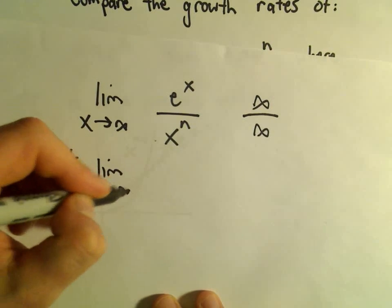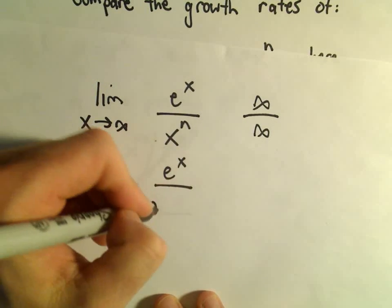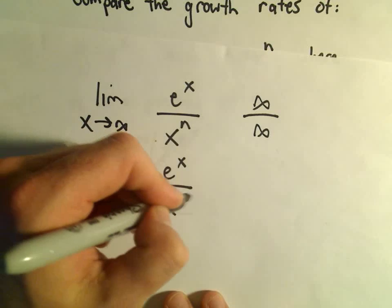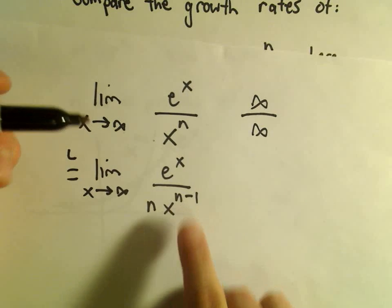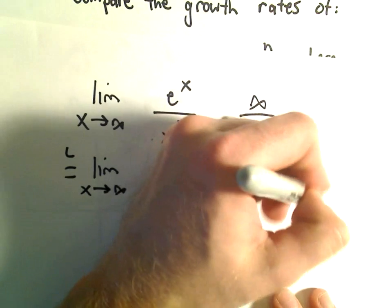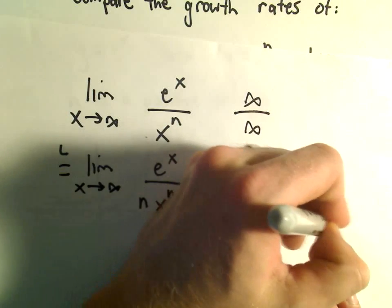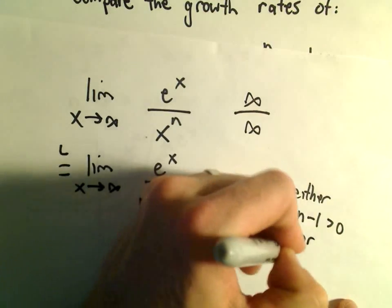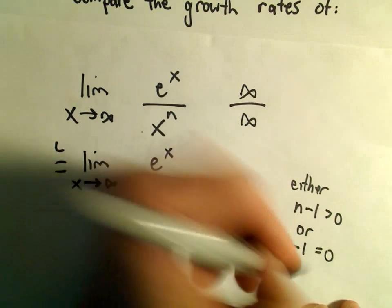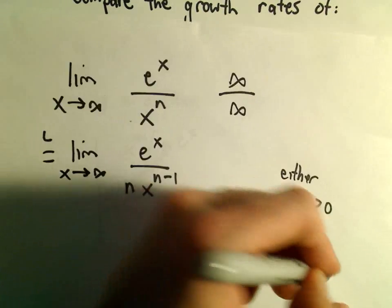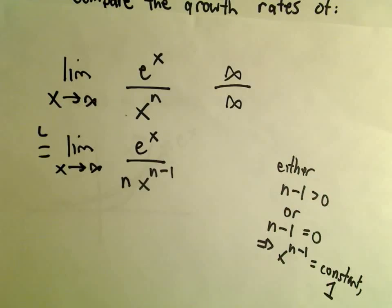Applying L'Hôpital's rule, we get the limit as x goes to infinity of: the derivative of e to the x is just e to the x, and we get n times x to the n minus 1. So depending on what your power is, either n minus 1 is greater than 0 or n minus 1 equals 0. If n minus 1 equals 0, then x to the n minus 1 is just going to equal the constant 1.